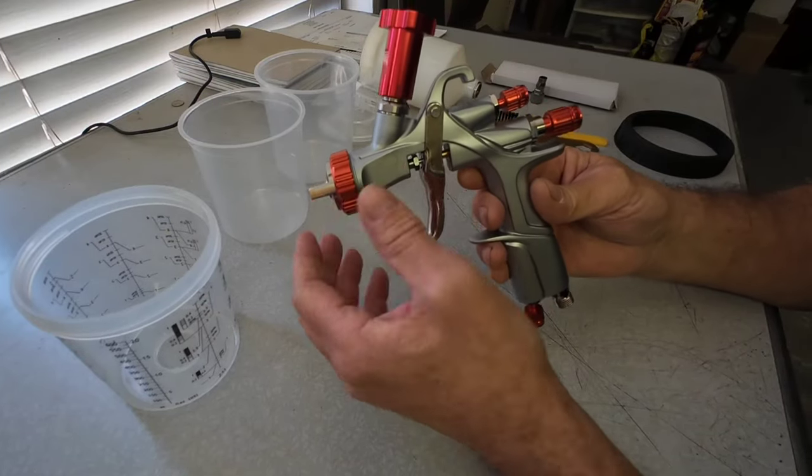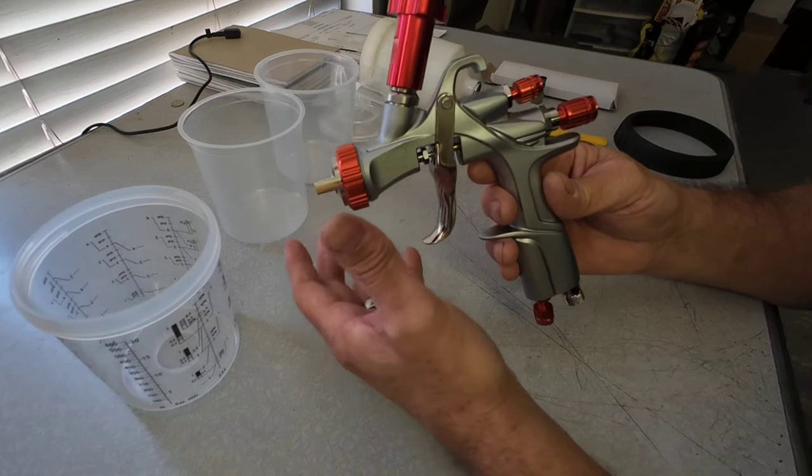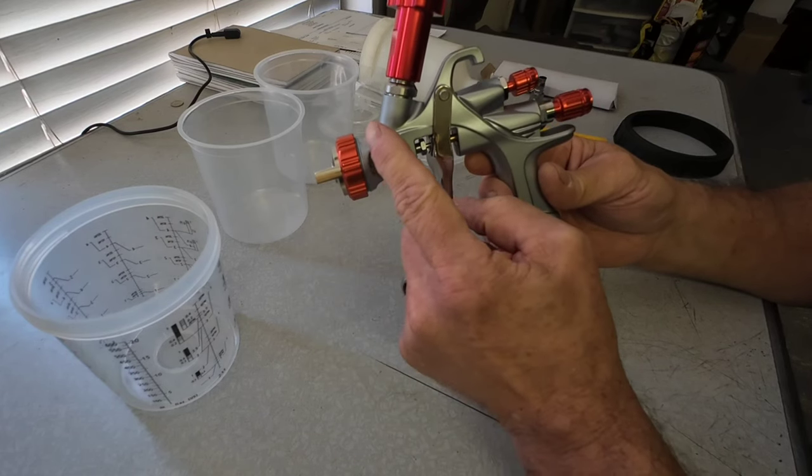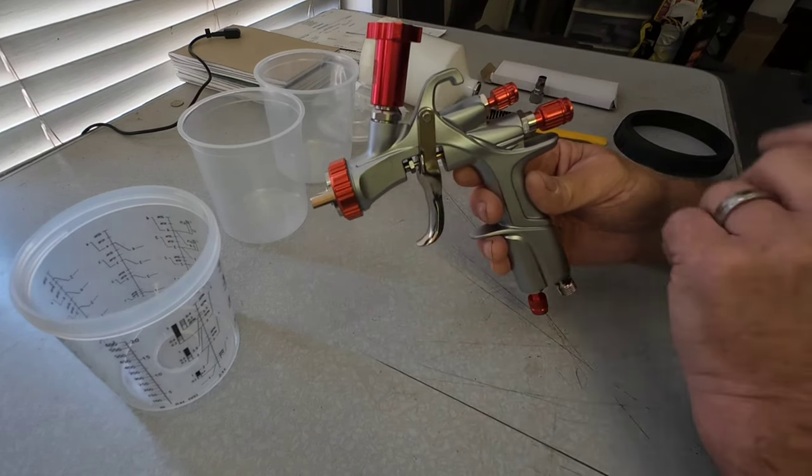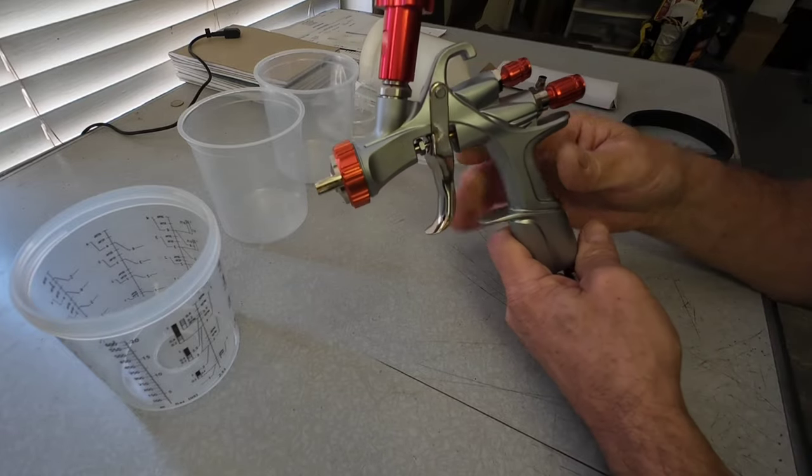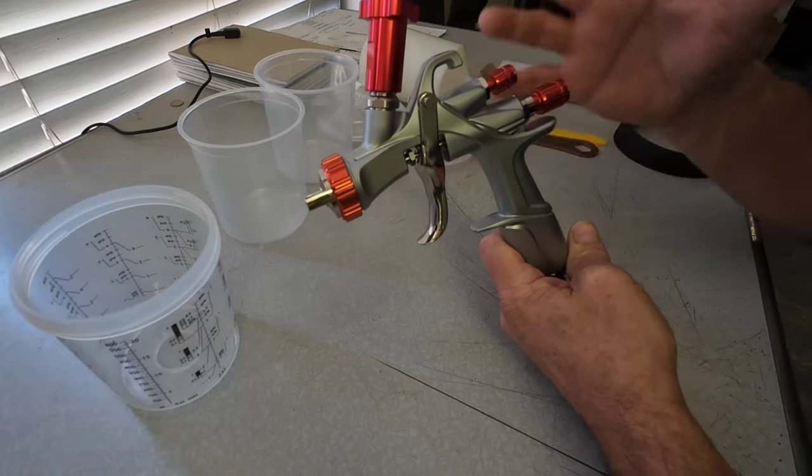The unique thing about this gun is it doesn't require a lot of air to operate efficiently. So between four and five CFMs of air to operate efficiently and it lays down a beautiful looking clear coat, base coat finish.